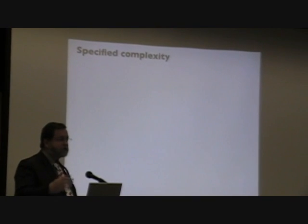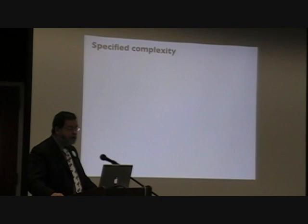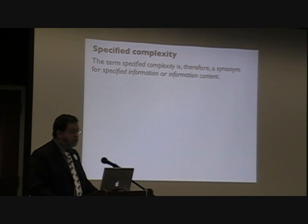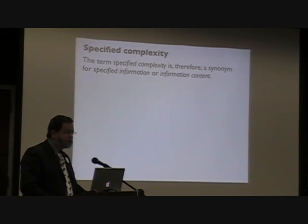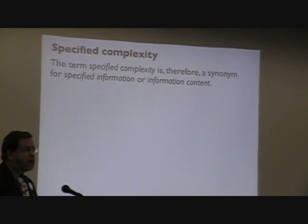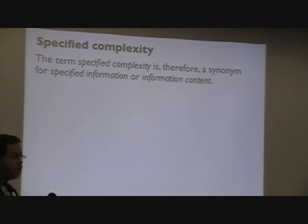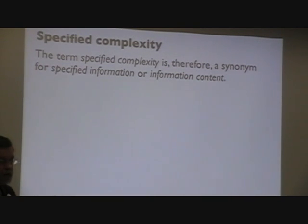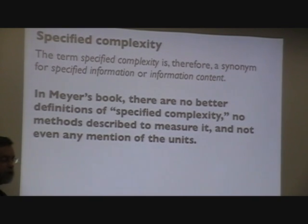Here's specified complexity - some special version of complexity, some special version of information. I looked through Monterey's book, which is a legacy summarizing all the positions of the intelligent design creation. I looked through this very thoroughly trying to find his definition for specified complexity. And here he is: 'The term specified complexity is therefore a synonym for specified information or information content.' That doesn't say anything. He's basically saying specified complexity is the same as specified information, but he hasn't told us what the 'specified' part means. That's the difference from Shannon information. What does 'specified' mean?